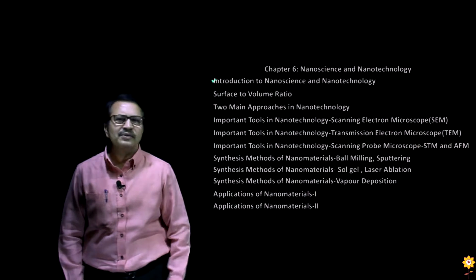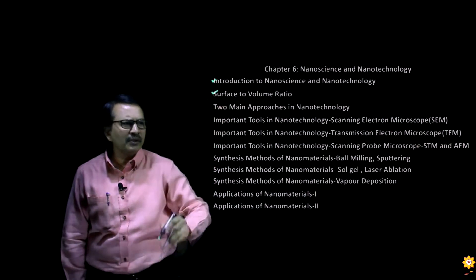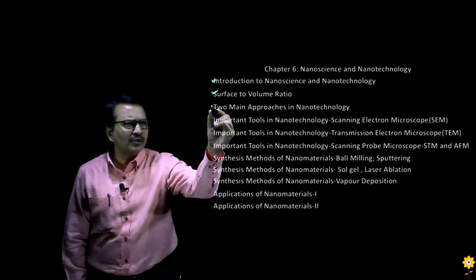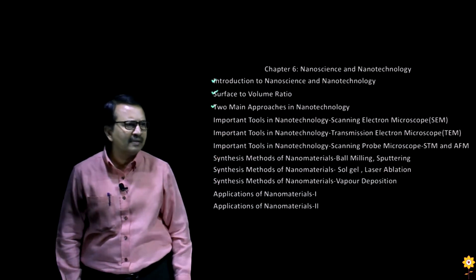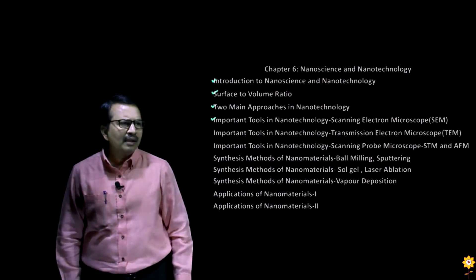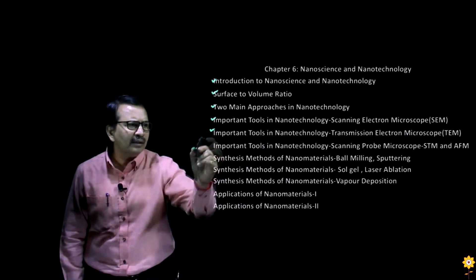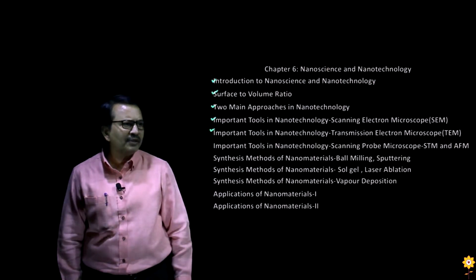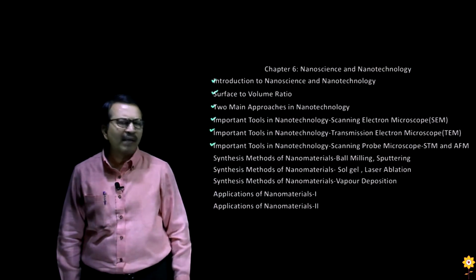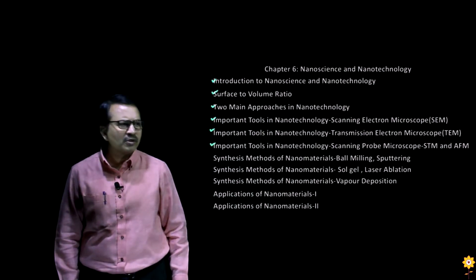First of all, we have done the introduction to nanoscience and nanotechnology. This was followed by a short introduction to the concept of surface to volume ratio in nanomaterials, then the two main approaches that are used for the synthesis of nanomaterials, then the important tools in nanomaterials — specifically the scanning electron microscope, the transmission electron microscope, and tools based on scanning probe microscopy: specifically the scanning tunneling microscope and the atomic force microscope.